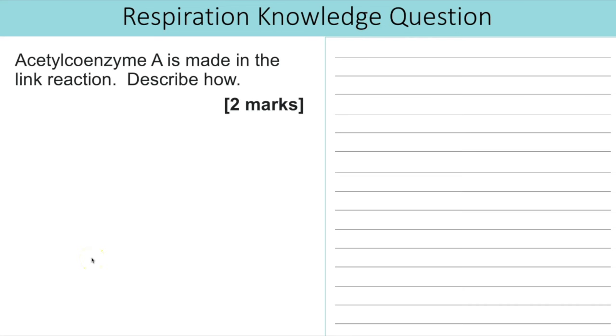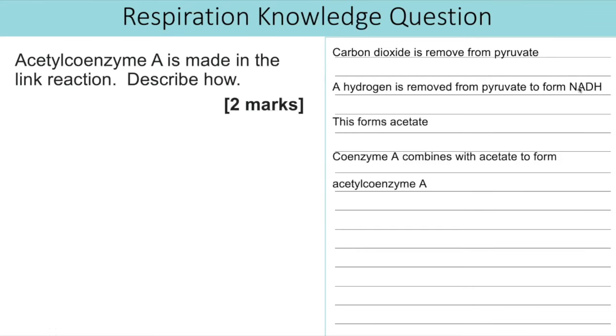So we begin with a two marker knowledge question. We've got acetyl coenzyme A is made in the link reaction and we have to describe how. So I'm basically just going to describe the link reaction because that's how we create this acetyl coenzyme A. The first I'm going to say is that carbon dioxide is removed from the pyruvate but you also have a hydrogen that is removed from the pyruvate that's picked up by NAD to create NADH or reduced NAD. That creates acetate and it's the acetate that combines with coenzyme A to make our acetyl coenzyme A. So those would be the marks I would say for those two that we need to have.